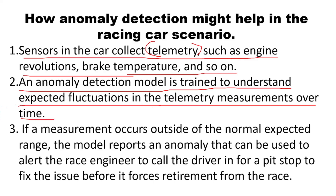If any fluctuations or changes occur in the measurement, the anomaly detection model is already trained to understand such fluctuations — for instance, brake loss, diesel levels, or increased engine temperature. All unusual activities are detected. Sometimes a fluctuation can be normal — meaning expected and acceptable — or abnormal, meaning something that cannot be accepted.